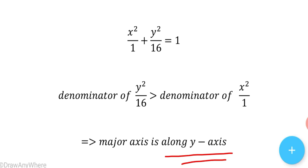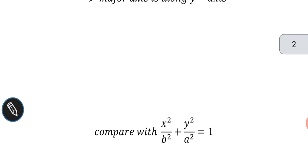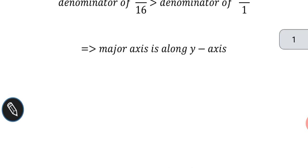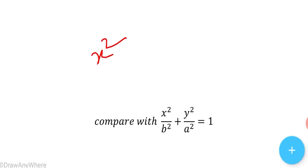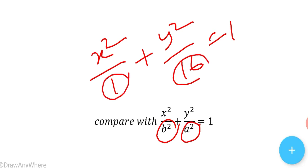Since the major axis is along the y-axis, the corresponding equation is x²/b² + y²/a² = 1. Comparing x²/1 + y²/16 = 1 with this form, we get b² = 1 and a² = 16.